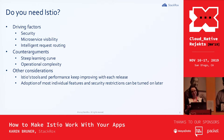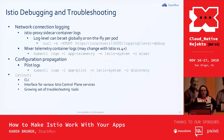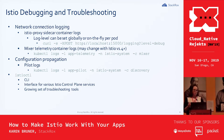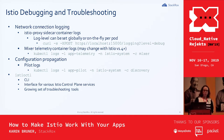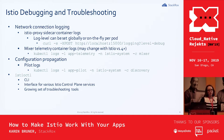Istio debugging and troubleshooting is still kind of the wild west — lots of low-level commands. The best place to start is connection logging: check the Istio proxy sidecar container logs for your target pods. You can narrow down which pod received the request. The Envoy proxy log level can be set globally for your deployment or on the fly for a single pod, but be aware that debug level is very verbose — you probably don't want it on globally all the time.